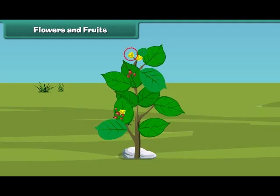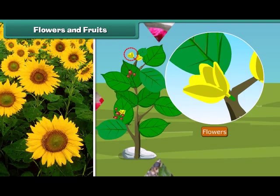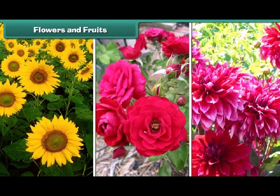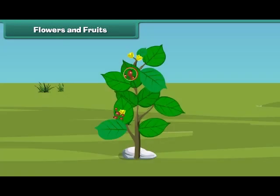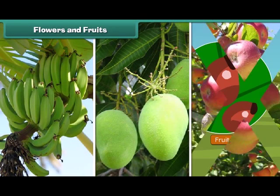Friends, now let us know about the most attractive and most beautiful part of the plant. Yes, that is the flower. Flowers are of different colors and types like sunflower, rose, and dahlia, and so on. I know that most of you also like fruits. Fruit is the juicy part of the plant. Fruits come in different shapes, sizes, and colors like banana, mango, apple, and oranges.